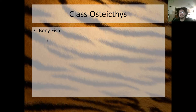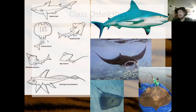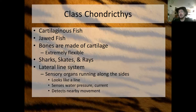Osteichthyes: osteo means bone, ichthyes means fish. Amazingly enough, a cartilage cell is called a chondrocyte. The chondro prefix means cartilage, ichthyes means fish — cartilaginous fish.